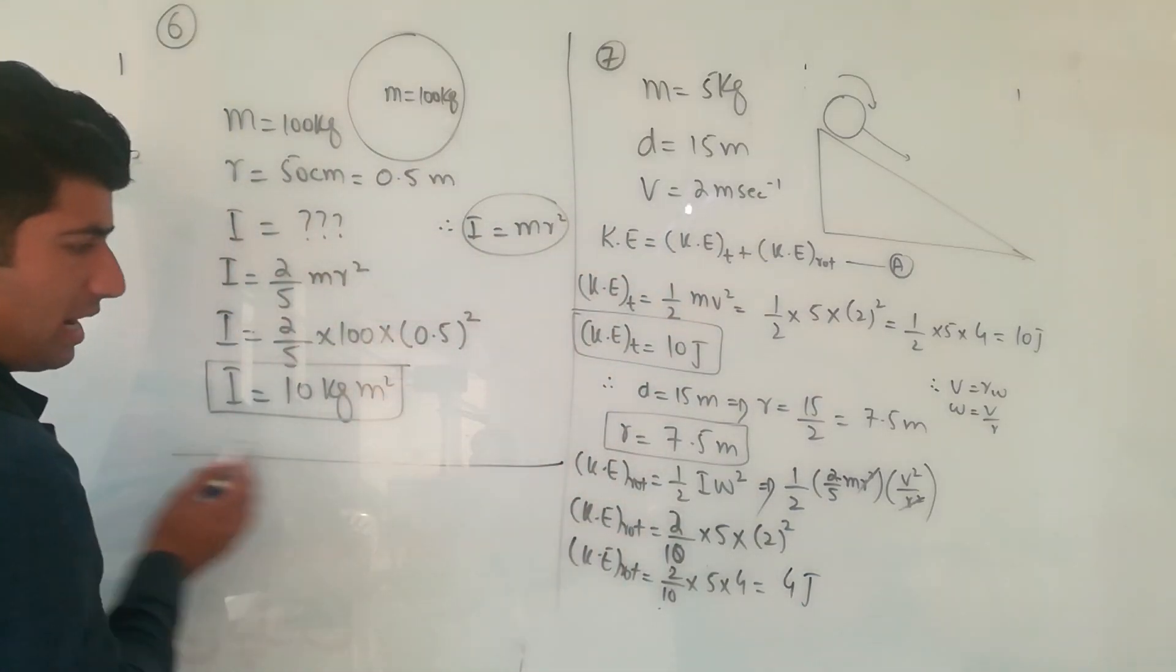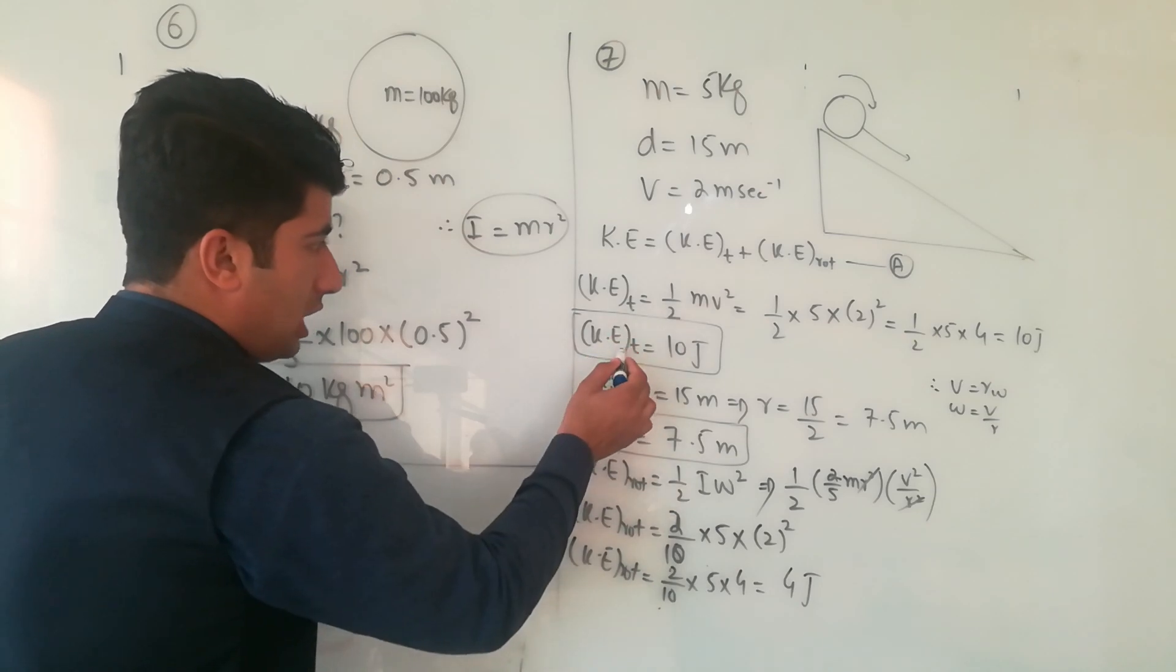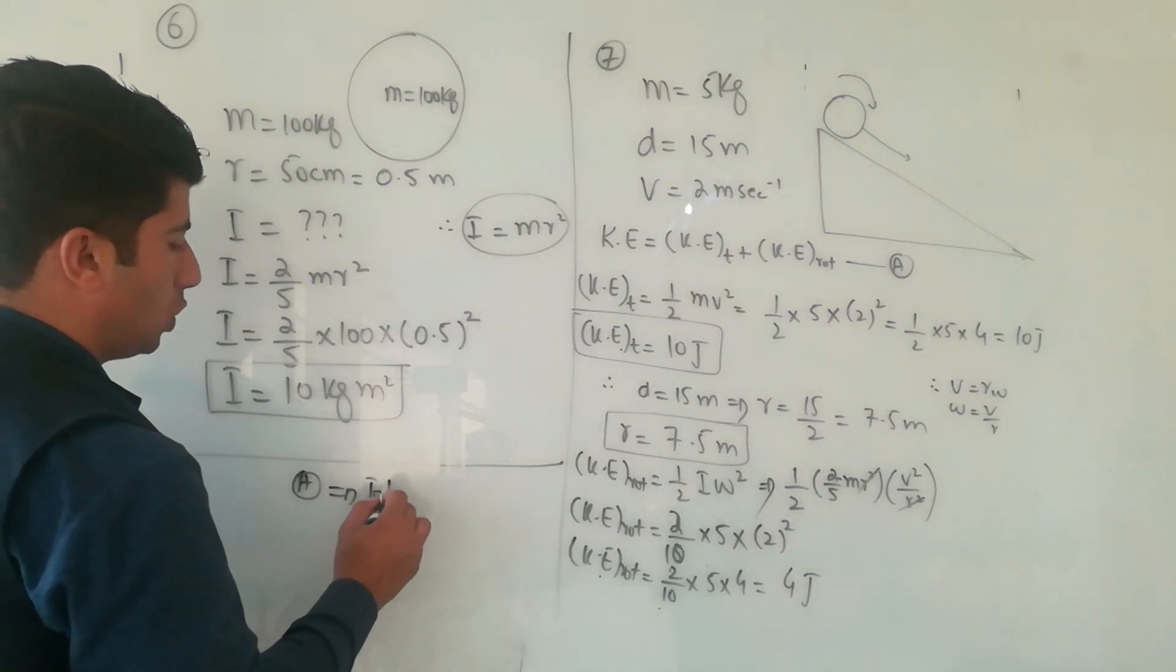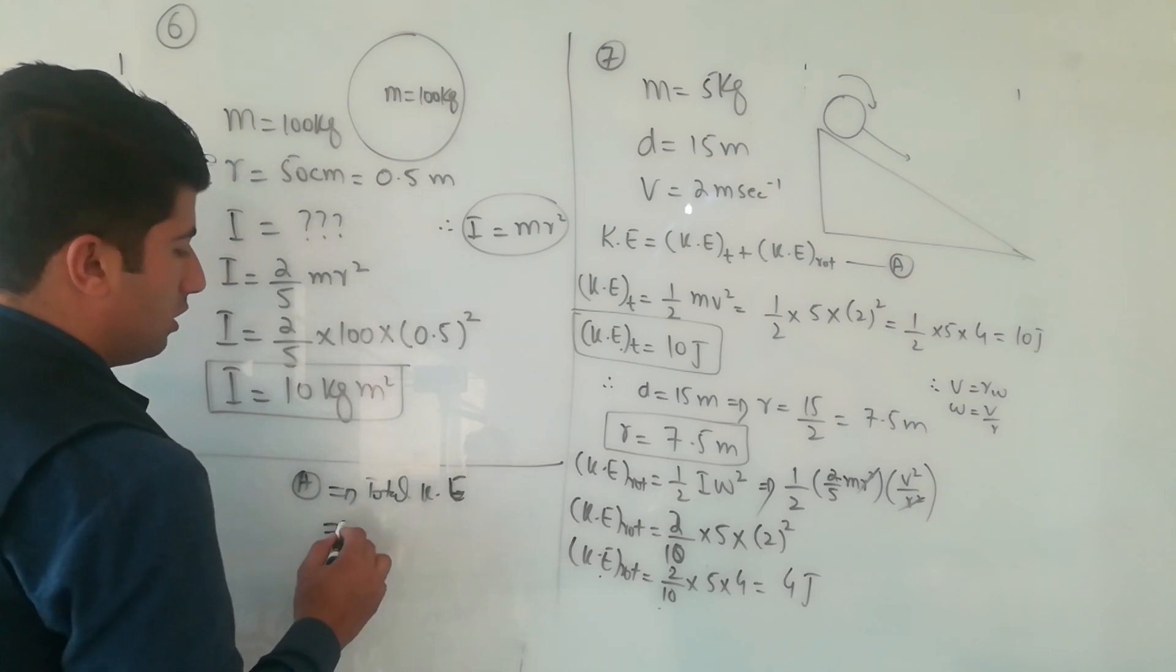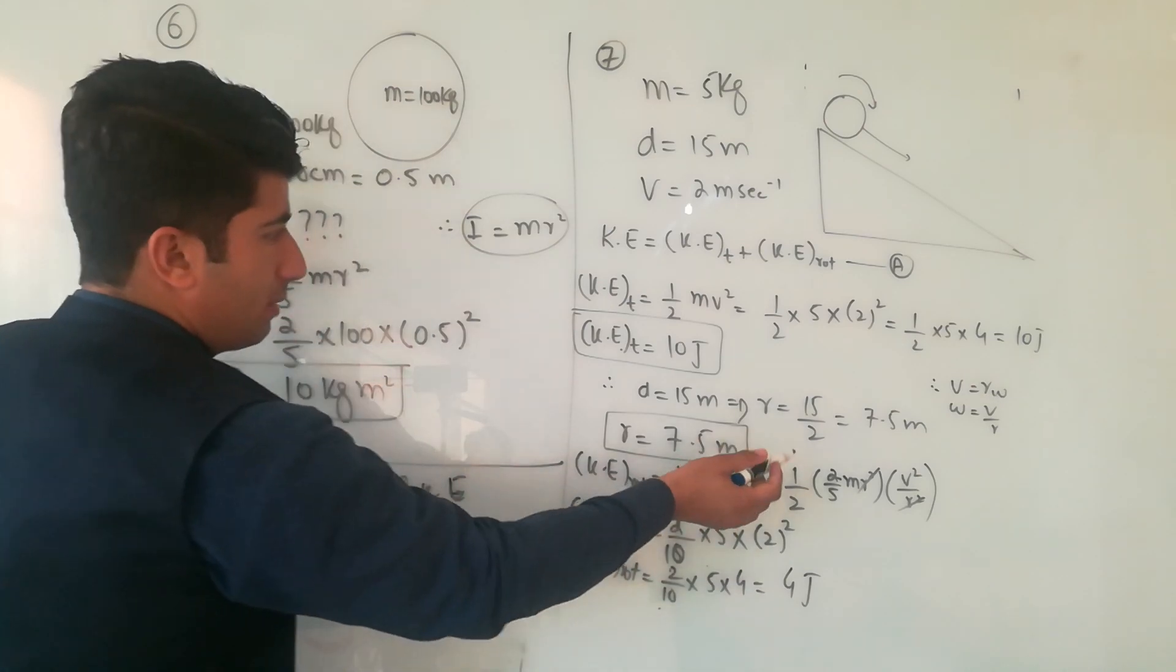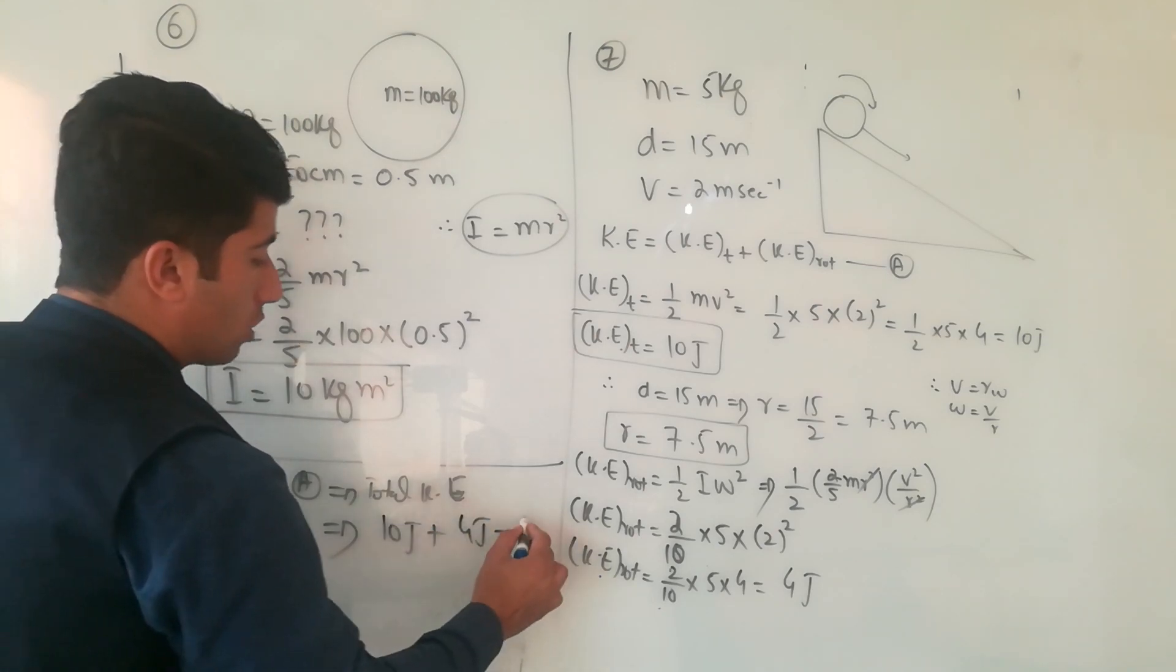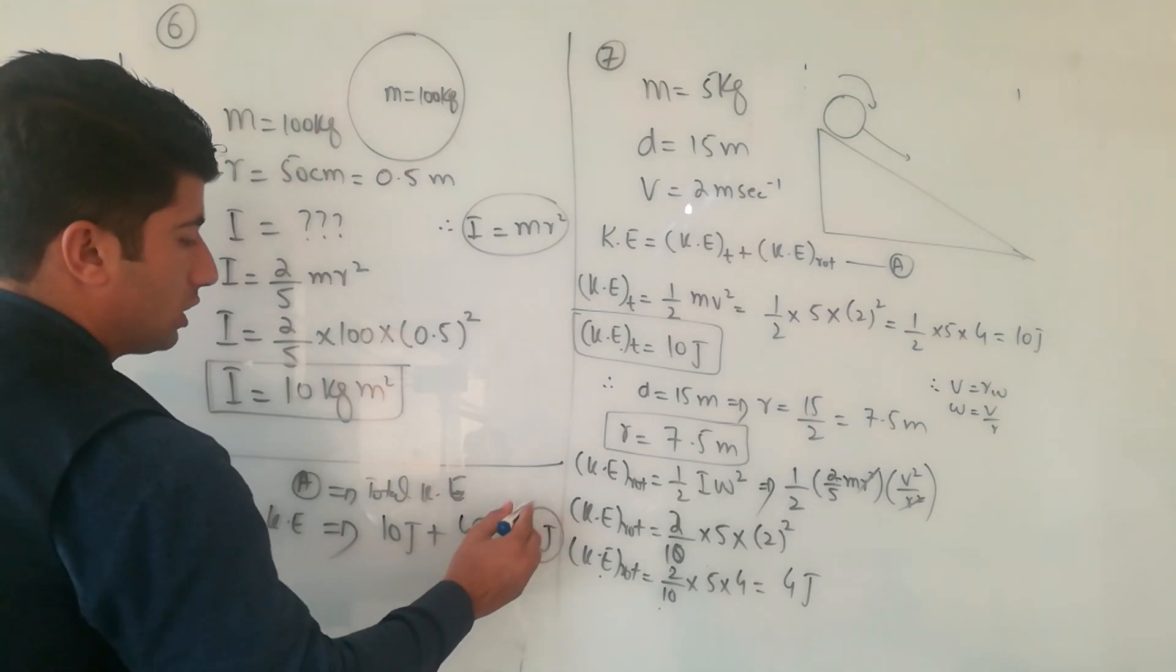Rotational kinetic energy is 4 joules. Now for the translational kinetic energy, we will use the work-energy equation. Total kinetic energy equals translational kinetic energy, which is 10 joules, plus rotational kinetic energy, 4 joules. So 10 plus 4 gives us 14 joules total energy.